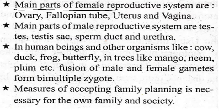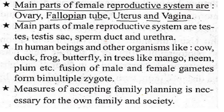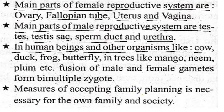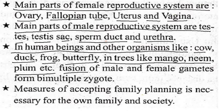The main parts of the female reproductive system are: first, ovary; second, fallopian tube; and third, uterus; and vagina. The main parts of the male reproductive system are testis, sperm duct, and urethra. In human beings and other organisms like cow, duck, frog, butterfly, and trees like mango and neem, fusion of male and female gametes forms the bi-multiple zygotes.